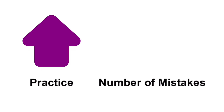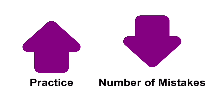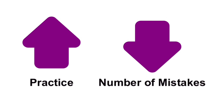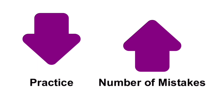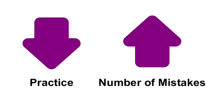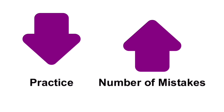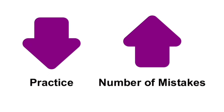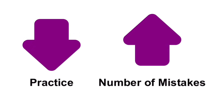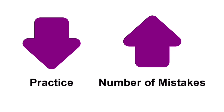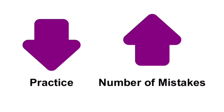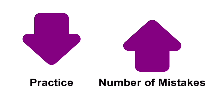Practice and number of mistakes are also inversely proportional to each other. The more we practice, the fewer mistakes we commit. On the other hand, the less we practice, the more mistakes we make. So these two are inversely proportional to each other.